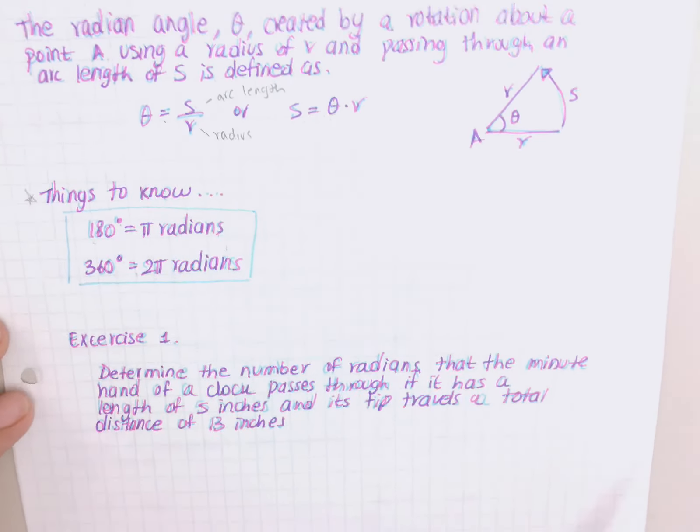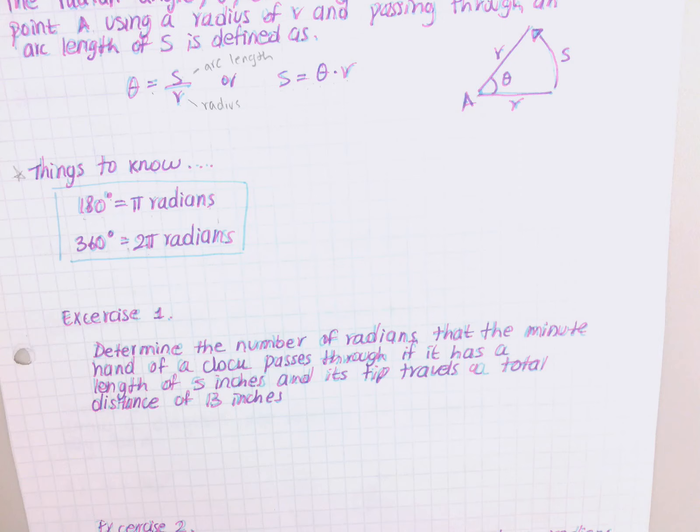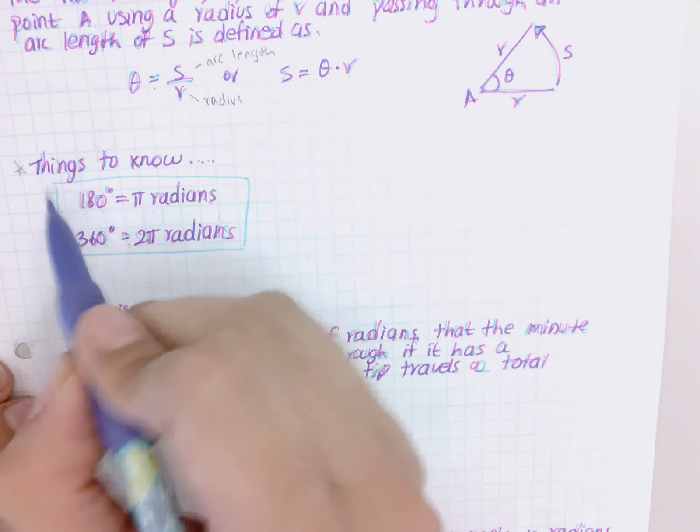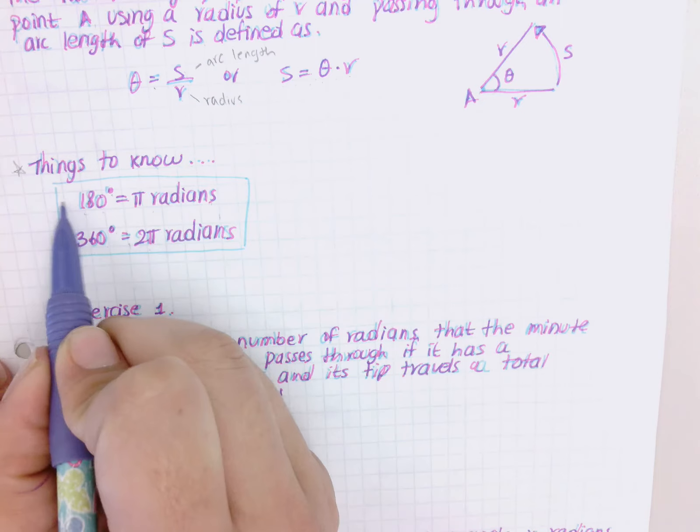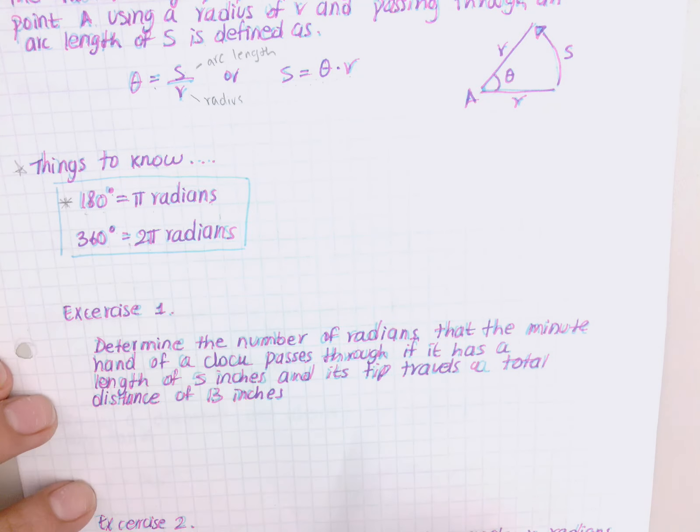So hopefully this makes sense, and that's just something we're going to be using to convert between degrees and radians. You'll see how we use it in a minute. This is something that you just kind of have to know. Normally this is the one that most people use, but you're free to use whichever you want.